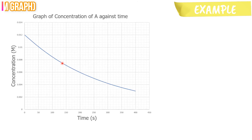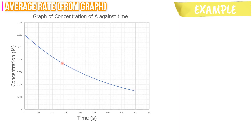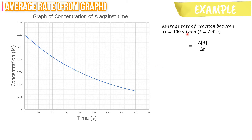Using the same graph, let's calculate the average rate of reaction between T equals to 100 seconds and T equals to 200 seconds. The first step: write the formula for the average rate of reaction. The average rate of reaction between T equals to 100 seconds and T equals to 200 seconds is equal to negative delta A over delta T.